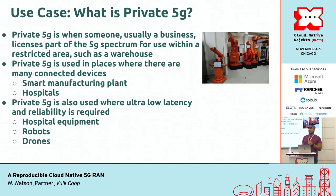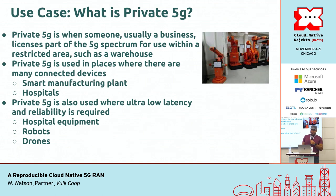What is private 5G? This is the main use case for playing around with something like this. Basically, an entity — most likely a business — licenses part of the 5G spectrum and uses it within a restricted area like a warehouse or parking lot. Why? Because 5G allows for higher connectivity and a higher concentration of devices. One use case is smart manufacturing: all the robots and IoT devices within a facility. Also hospitals. Another use case is the ultra-reliable low-latency scenario: robots in smart manufacturing, drones, and medical devices all require that.